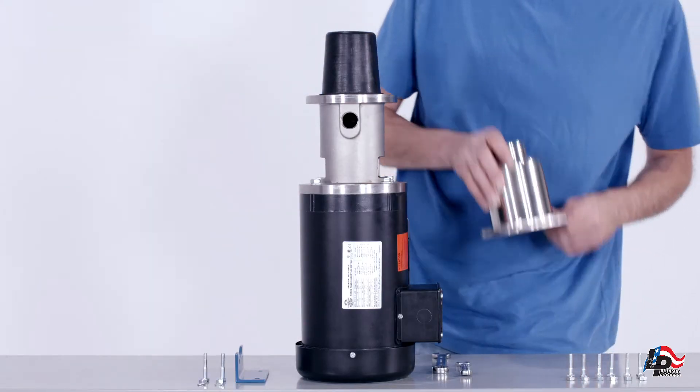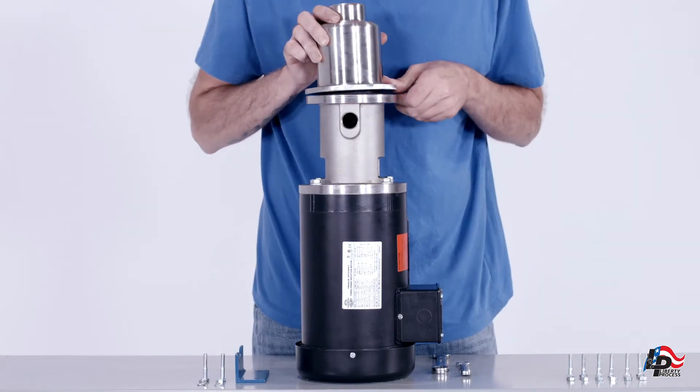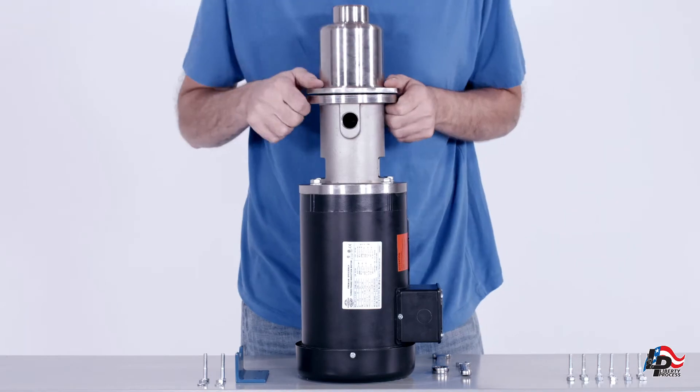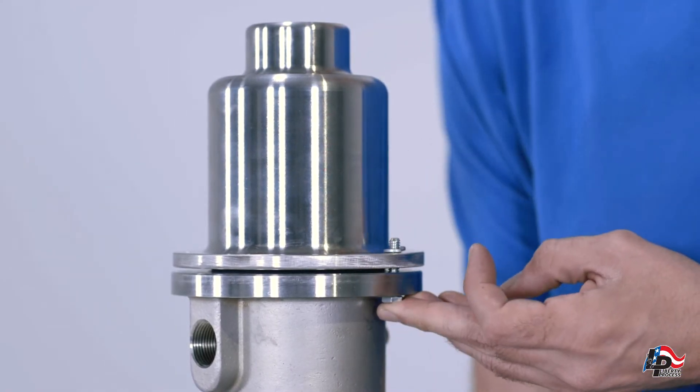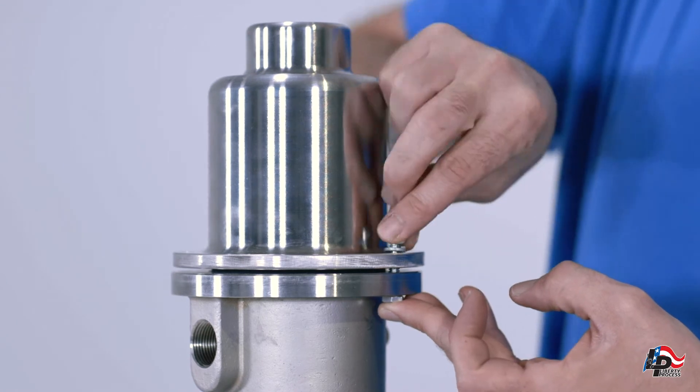Install the suction casing onto the pump assembly. Bolt the suction casing down using the seven sixteenth inch bolts, saving the two largest bolts for the foot assembly.